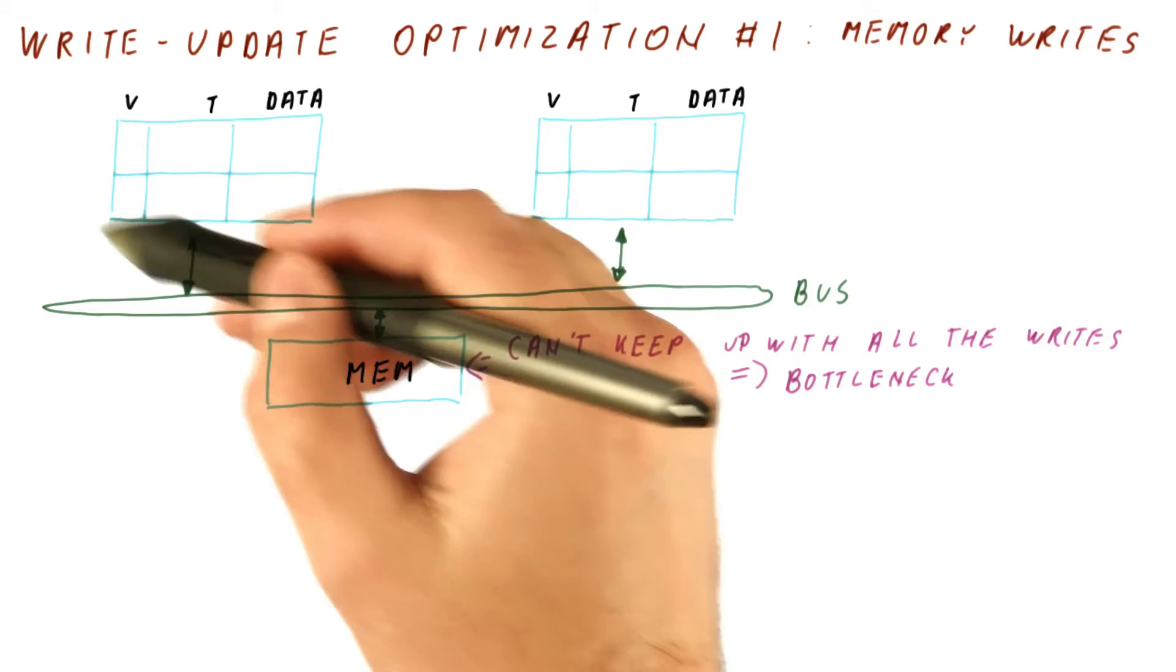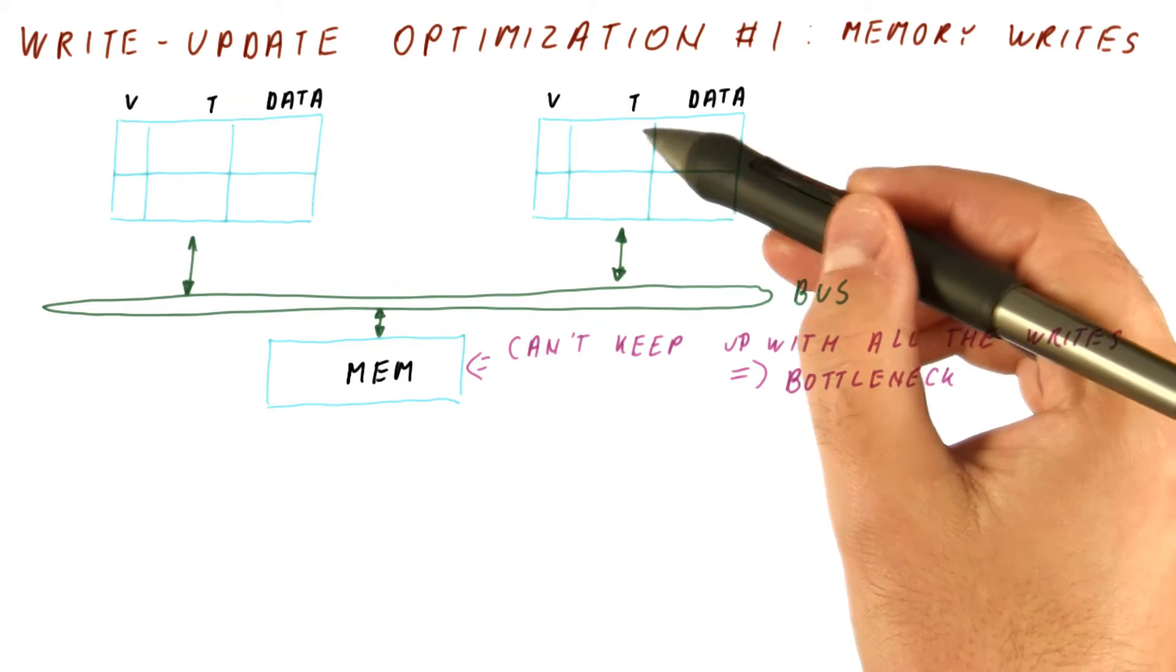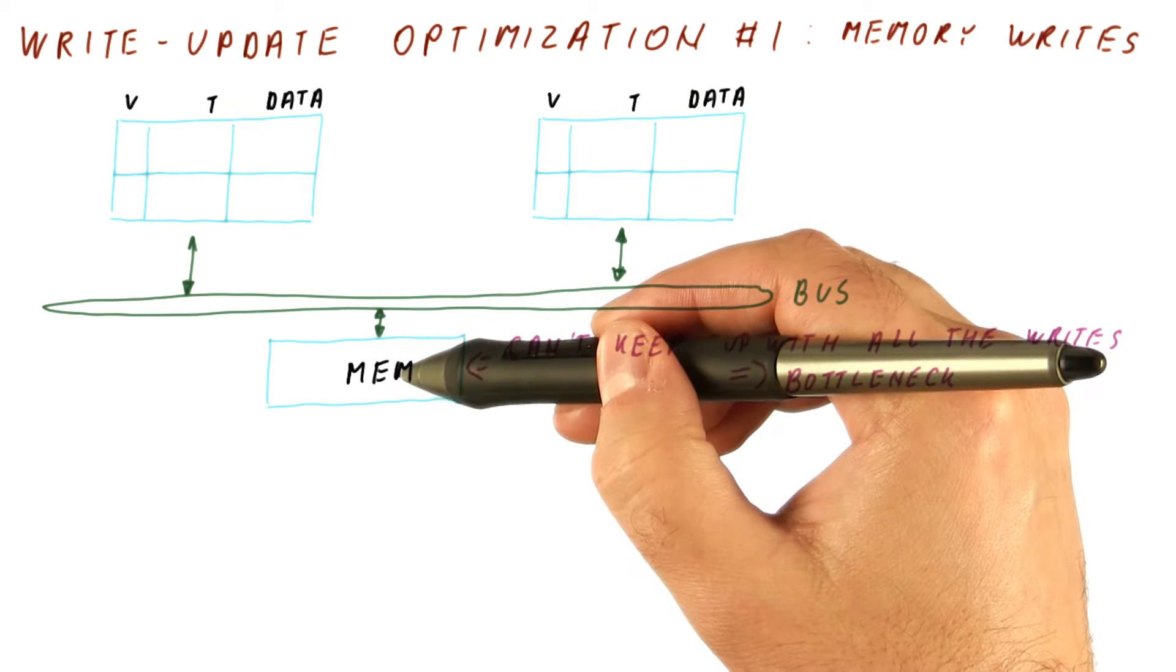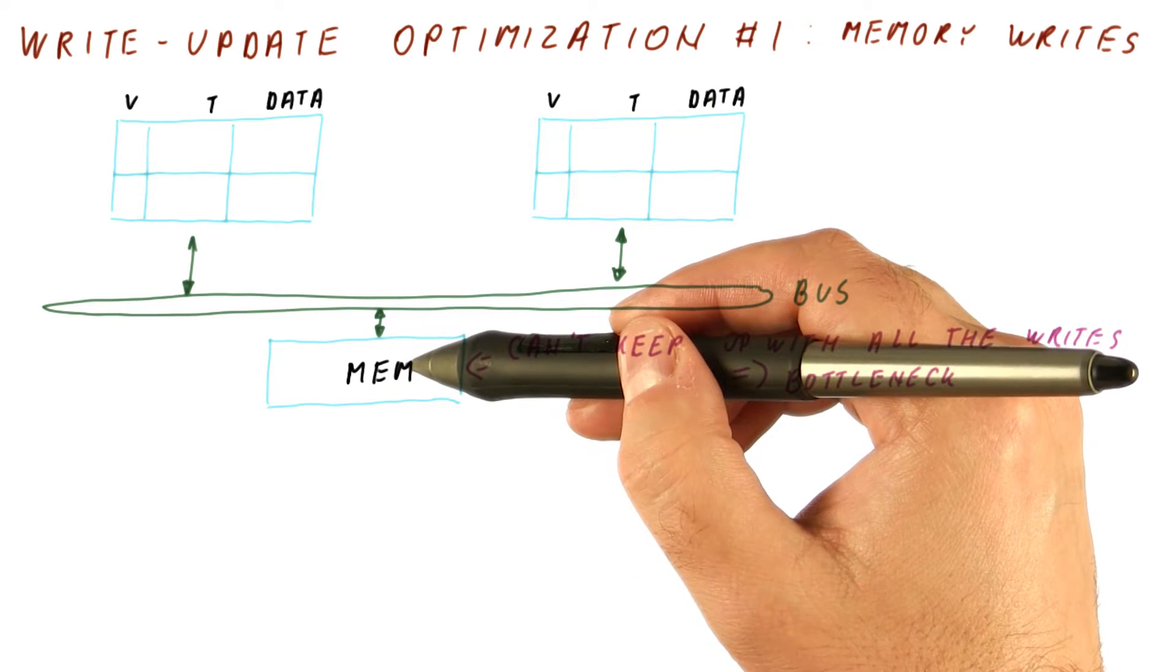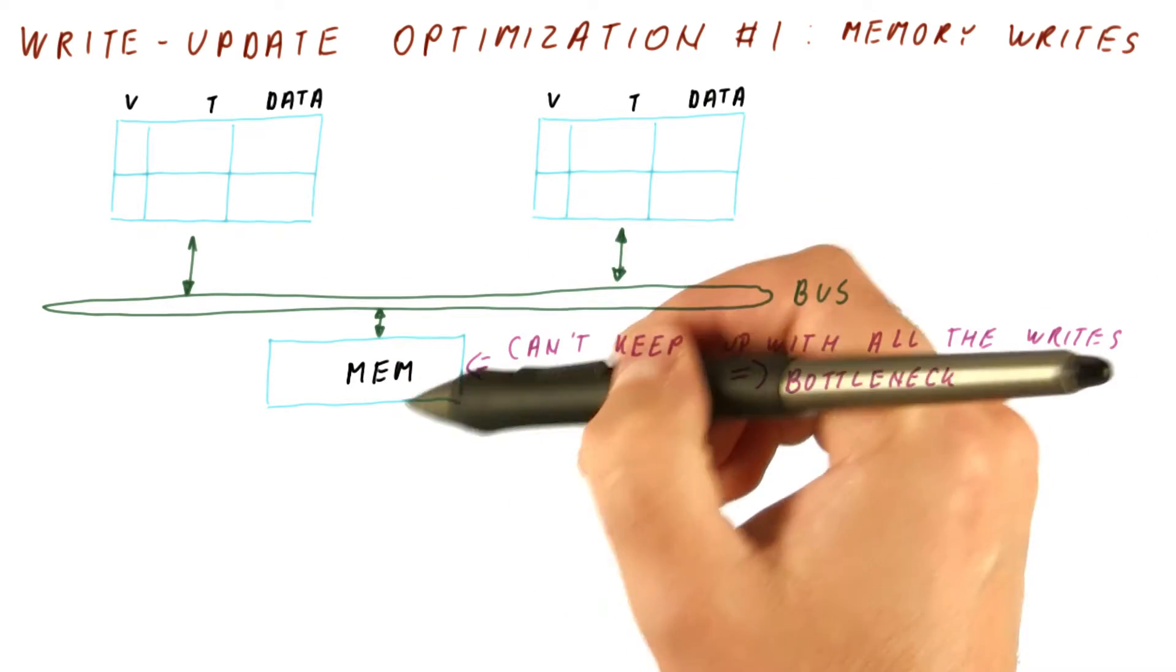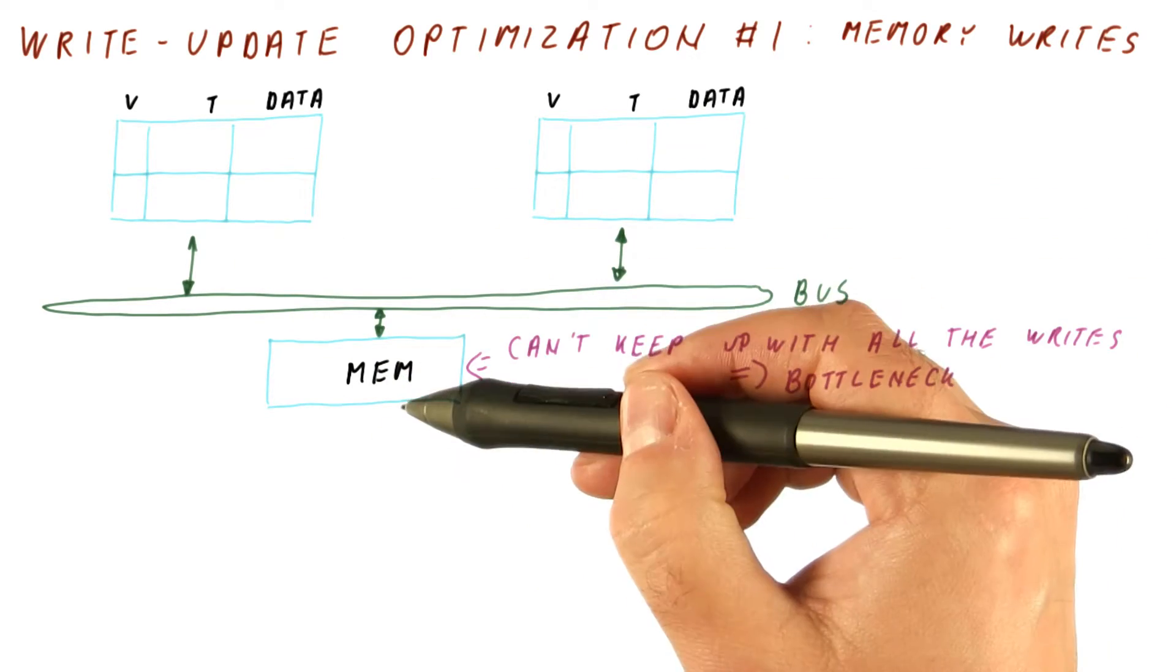These caches previously behaved as write-through caches. Every write was going through the cache to memory, and we have seen already that write-through is bad for memory traffic, even with a single core. Now we're adding more than one core, so it's going to be even a bigger problem.